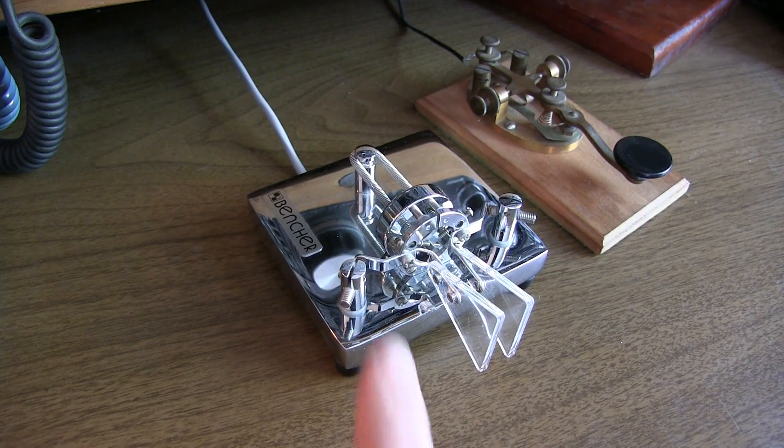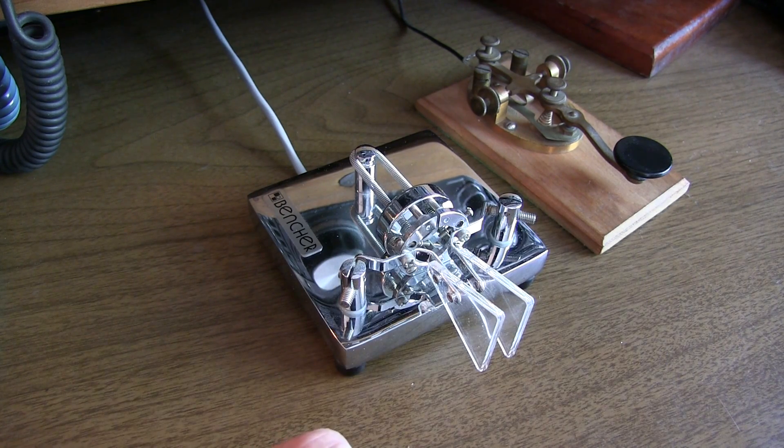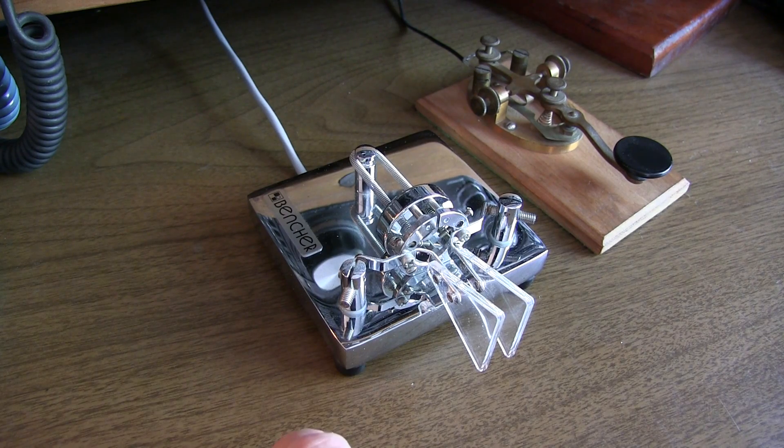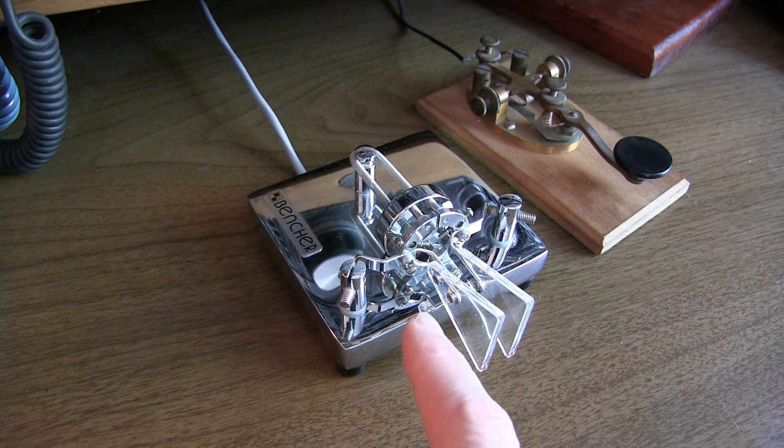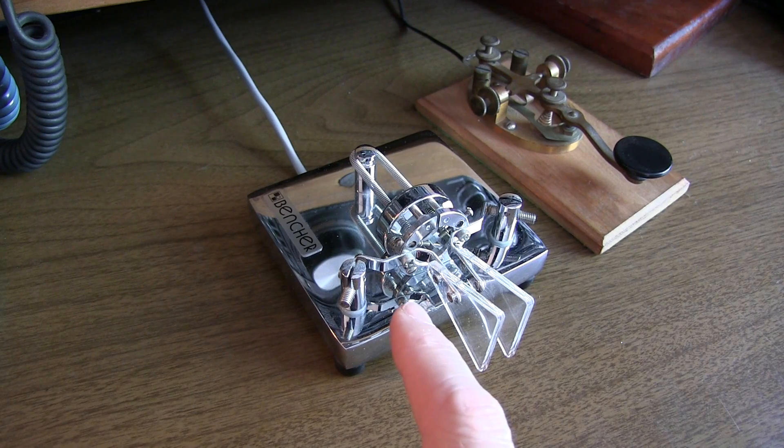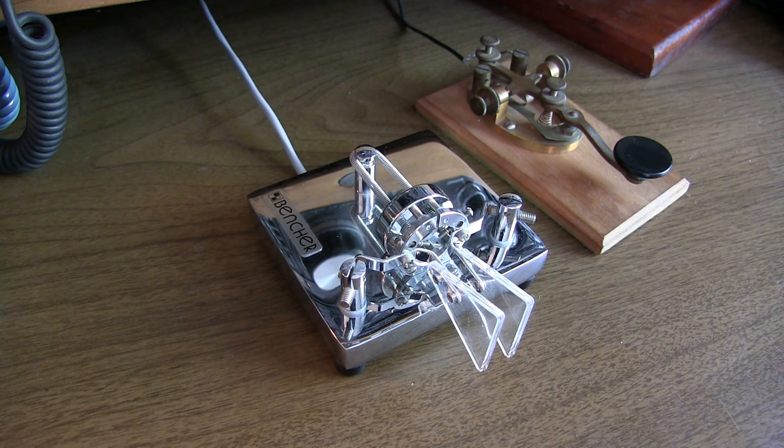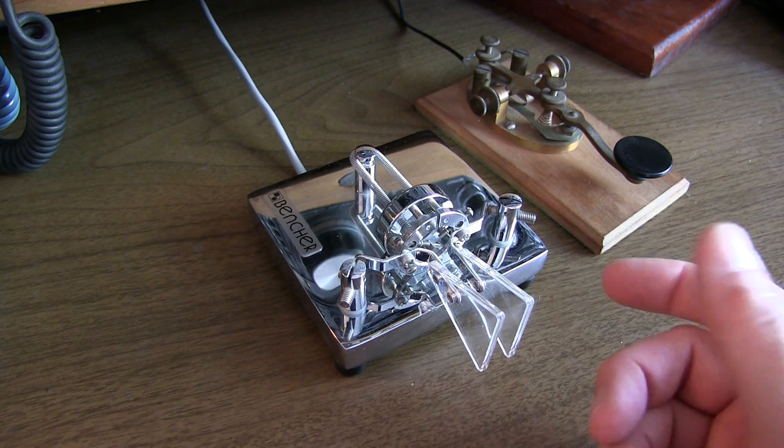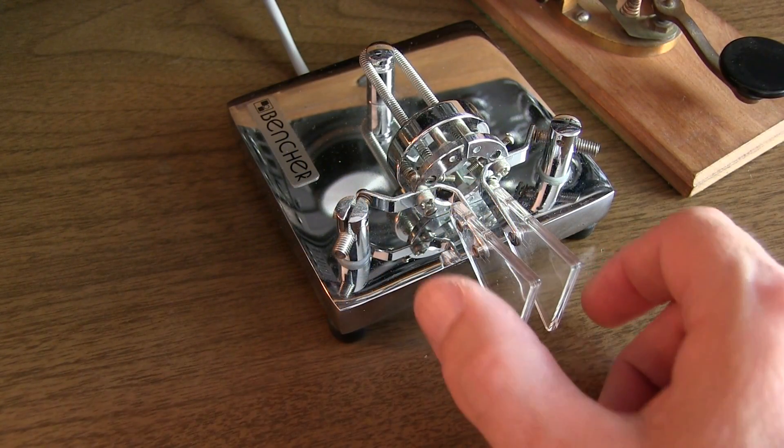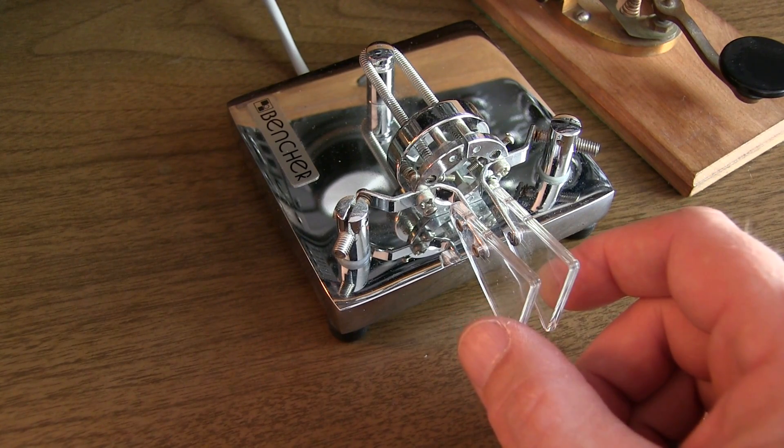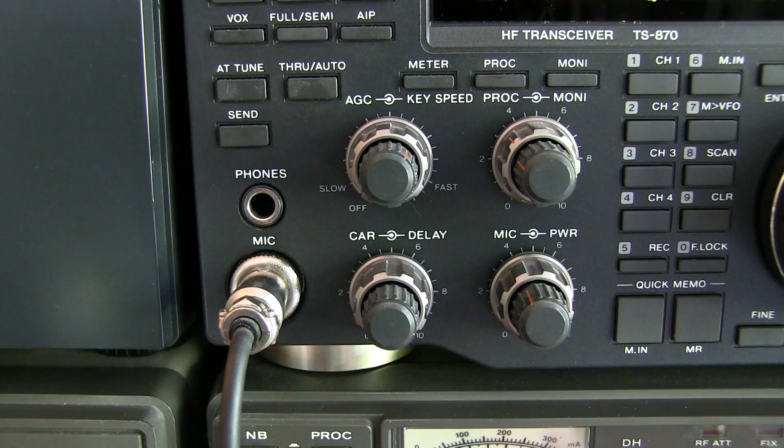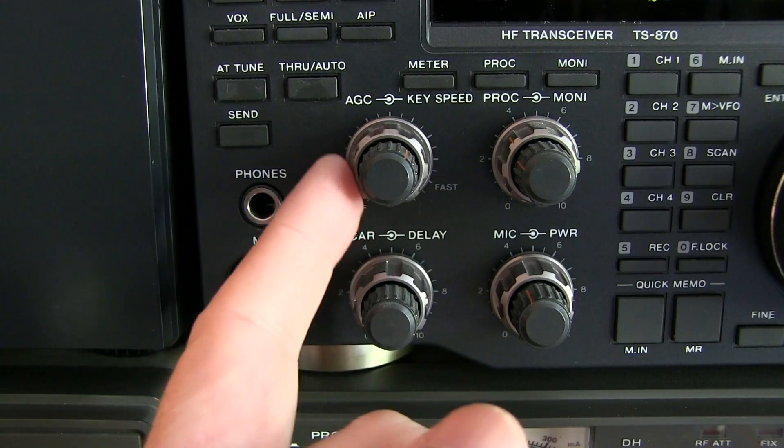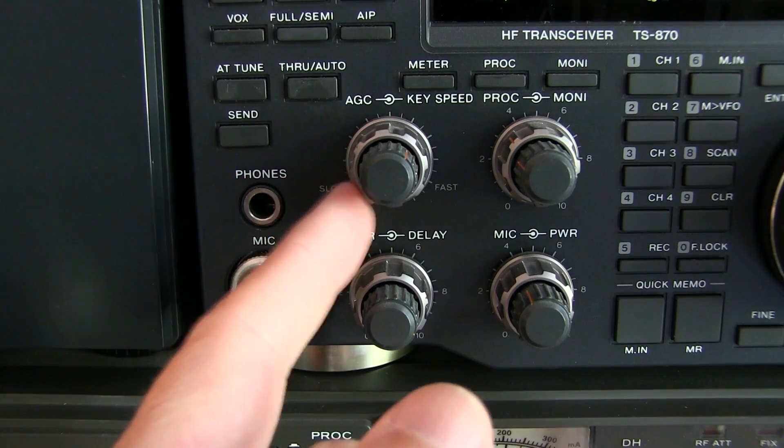The dual lever paddle, like this one from Bencher, really is nothing more than two normally open push-button switches. One switch used to form the dits, one switch used to form the dahs. Now the paddle itself doesn't form the dits and dahs. It's used in conjunction with an electronic keyer. Most often these keyers are built into modern transceivers. The keyer then controls the length of the dits and the dahs. And holding down either of the paddle will repeat that element. Of course it will do this with the proper timing. The speed of the keyer will typically be adjustable either on the front panel or maybe through a menu item to go from very slow to very fast or something in between.